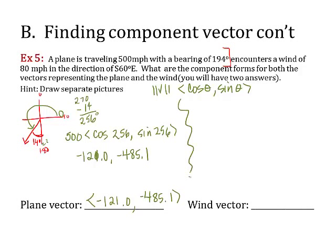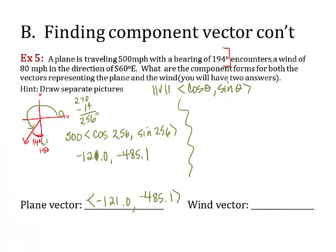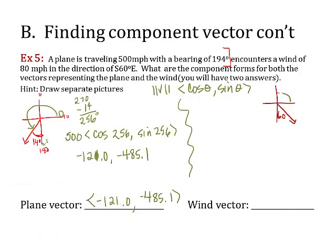Now, I'm going to walk through the same process for my wind that it's going to encounter. It encounters a wind that's 80 miles an hour in the direction of south 60 degrees east. Southeast is right here. If it's 60 degrees southeast, that means this part is 60. Now I've got to convert that to a vector angle. Counting from here, that's 270 plus 60. That gives me 330.